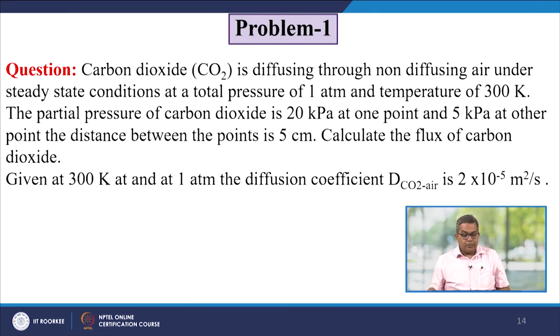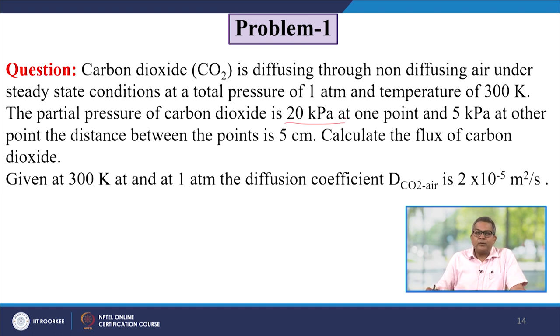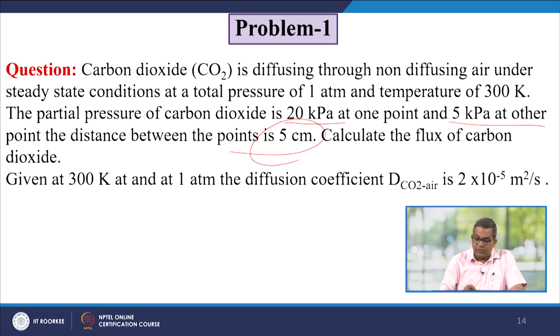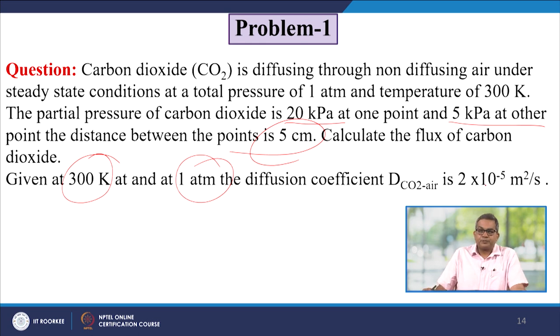Now let us take up a problem: carbon dioxide is diffusing through non-diffusing air under steady state conditions at a total pressure of 1 atmosphere and a temperature of 300 K. The partial pressure of CO2 is 20 kPa at one point and 5 kPa at the other point. The distance between these two points is 5 cm. We need to calculate the flux of CO2. The diffusion coefficient DCO2-air at 300 K and 1 atm is 2×10⁻⁵ m²/s. Assuming ideal gas, let air equal B.